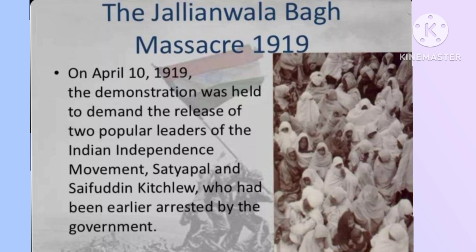Gandhiji fought against the British with the inspiration got from the freedom movements of South Africa, and the people there inspired Gandhiji much. His weapons were the use of indirect protest, non-violence, and Satyagraha. He wrote about his principles in the newspaper Young India. Satyagraha was his main political weapon. Notably, Dr. Haralu, who was a traitor of Gaidinliu's movement, was awarded the Kaiser-i-Hind by the British, which means Emperor of India.